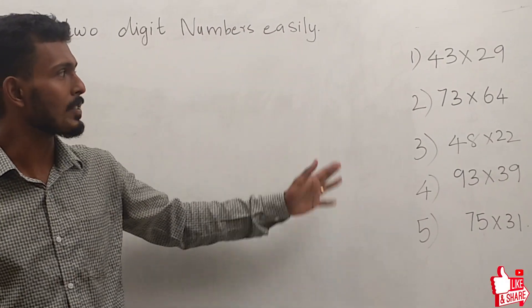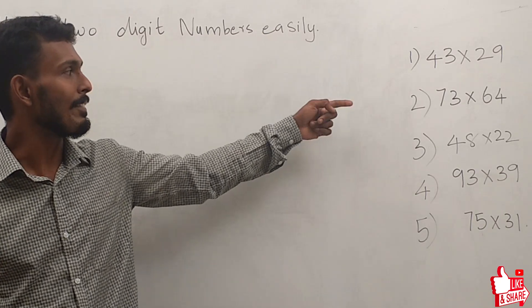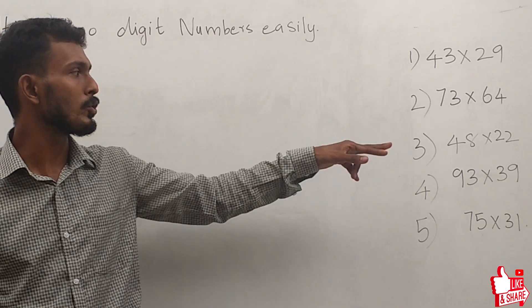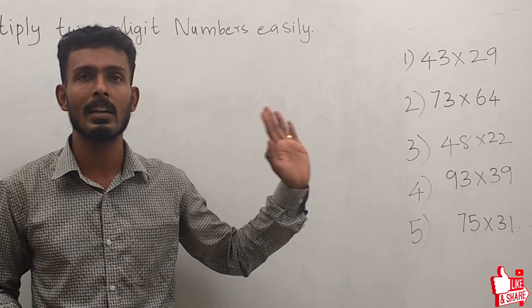For the board, I have written five questions: 43 × 29, 73 × 64, 48 × 22, 93 × 39, and 75 × 31.